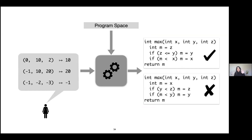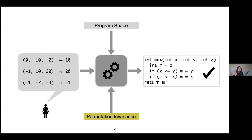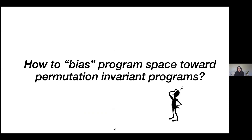Let's go back to the problem of ambiguity: there can be many programs consistent with the examples, but only some generalize to unseen inputs. Now suppose in this max example an oracle tells us that the program is permutation invariant — meaning the program output does not change when the elements of the program input are permuted. It turns out this additional knowledge is enough to eliminate the incorrect program and steer the search to a correct program. This is a relational property and clearly an instance of applying a semantic bias, but the question remains: how do we apply this bias efficiently?